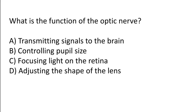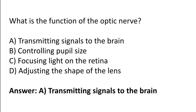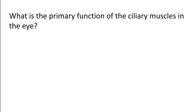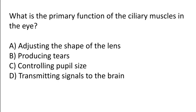What is the function of the optic nerve? Transmitting signals to the brain, controlling pupil size, focusing light on the retina, or adjusting the shape of the lens. The correct answer is option A — the function of the optic nerve is transmitting signals to the brain.